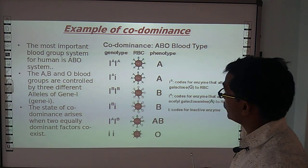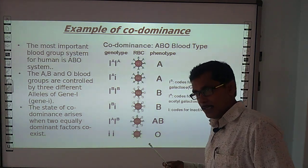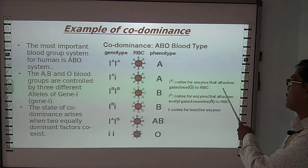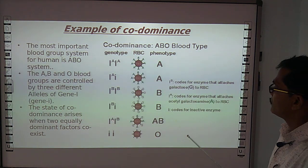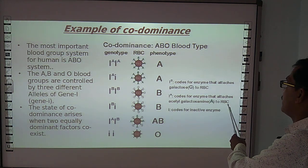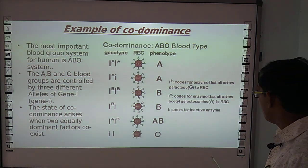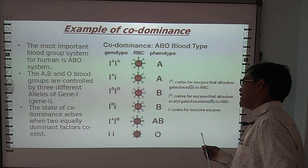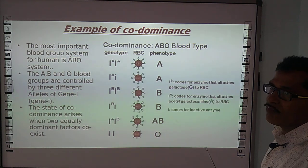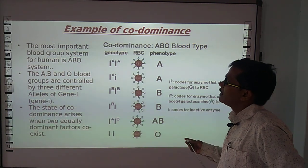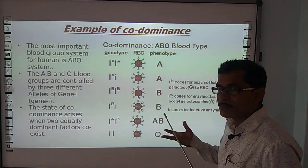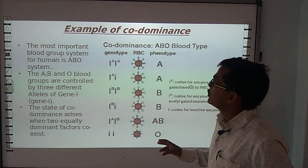I-B codes for the enzyme that attaches galactose to RBC. I-A also codes for an enzyme that attaches to galactose to RBC. Small i codes for an inactive enzyme. So the three allelic forms produce six genotypes in co-dominance, and all alleles express themselves simultaneously — hence it is called co-dominance.